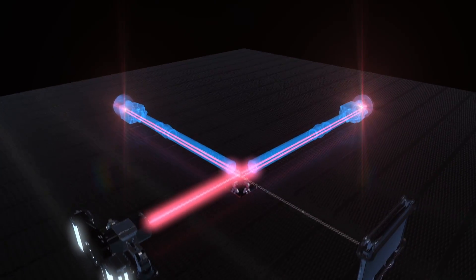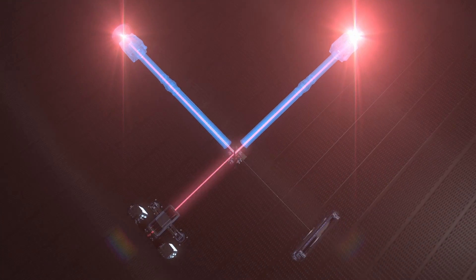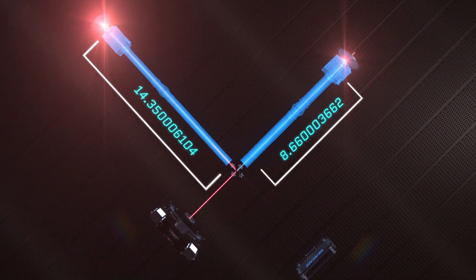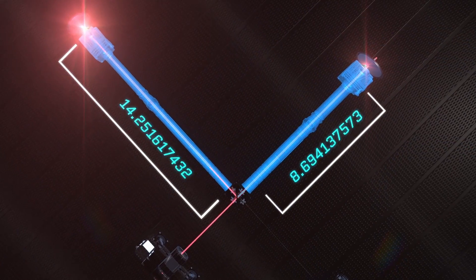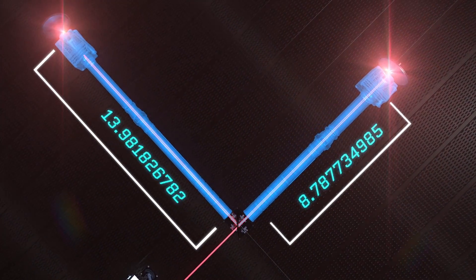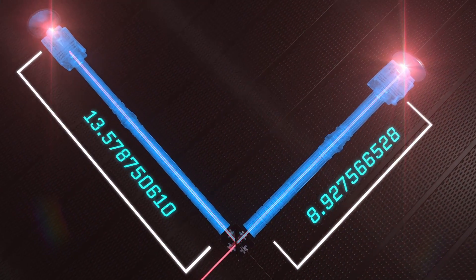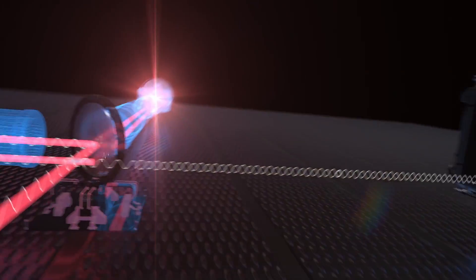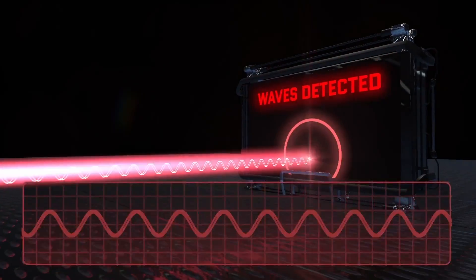But when a gravitational wave moves through, one arm of the vacuum tube gets longer, the other gets shorter, because they're perpendicular to each other. That means the laser has further to travel in one direction and shorter on the other, and that also means they don't meet up at the same time at the crux. Some light gets emitted. A light detector picks this up, and that's the information scientists use to determine whether or not a gravitational wave has moved through.